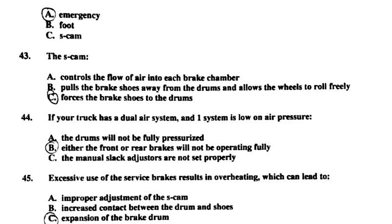Number fifty-four: the air brake lag at 55 miles per hour adds — B, 32 feet of stopping distance. And that is it — you have completed the air brake portion of the test. Make sure you check out the general knowledge and combination vehicle tests uploaded on my two previous videos. Good luck with your test, guys — peace.